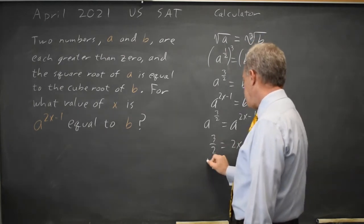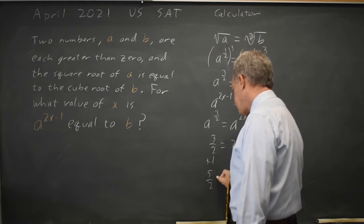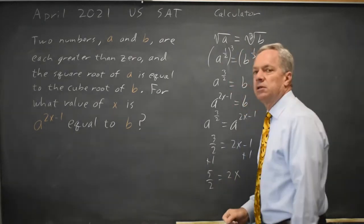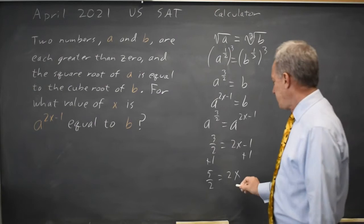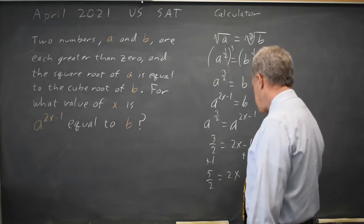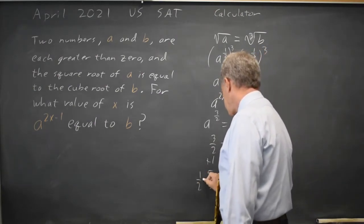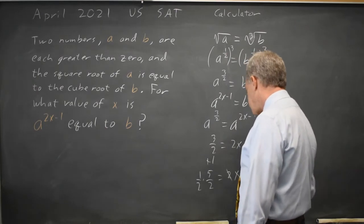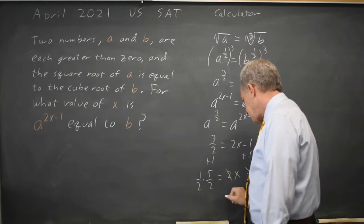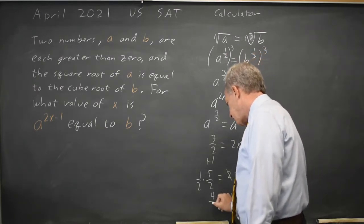If I add one to both sides, I get five-halves equals two-x. And they're asking for the value of x. So multiply both sides by one-half. Twice one-half is one. And I get x equals five over four.